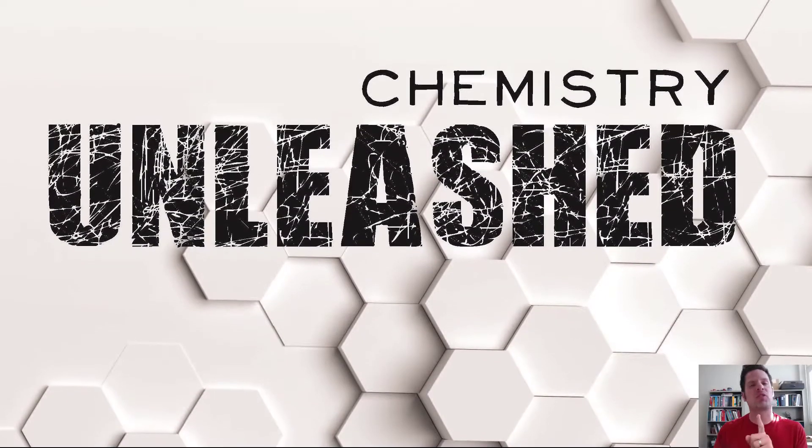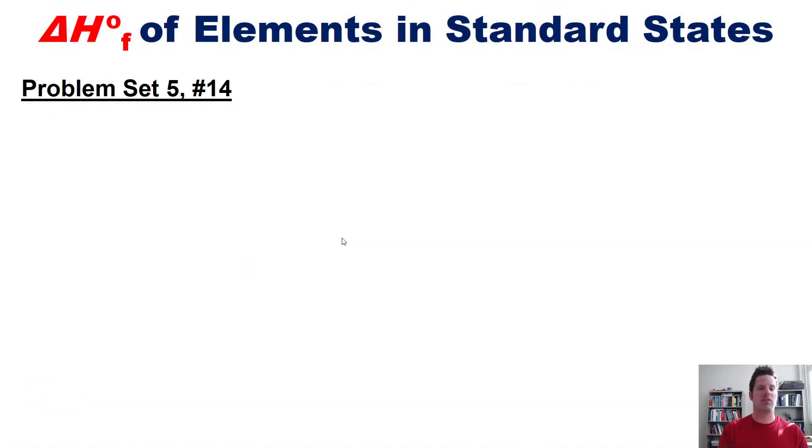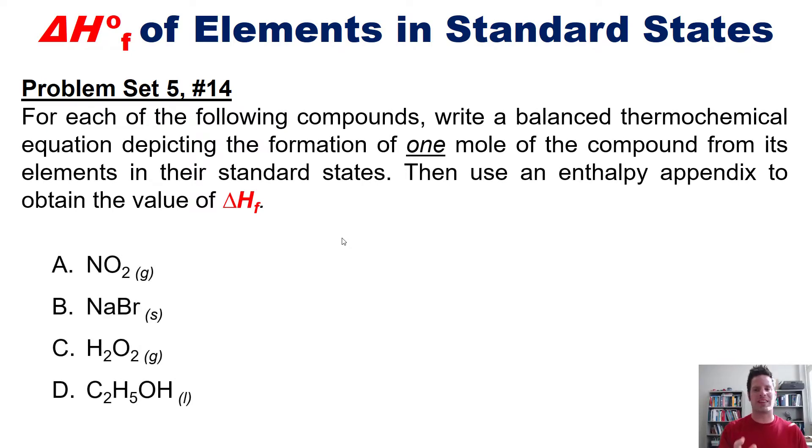That takes us to some awesome example problems from my university students' homework. For each of the following compounds, write the balanced thermochemical equation depicting the formation of one and only one mole of the compound from its elements in their standard states. Then use an enthalpy appendix to obtain the value of delta H sub f.